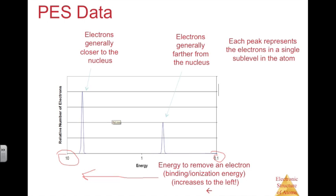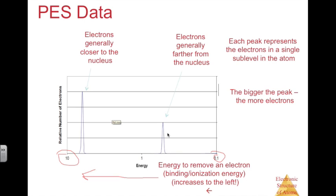Each peak represents the electrons in a single sublevel — that means S, P, D, and F. The bigger the peak, the more electrons. This first peak has more electrons than the second peak. If the first peak is about twice as tall as the second, it will have twice as many electrons.